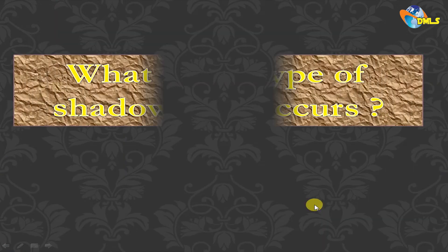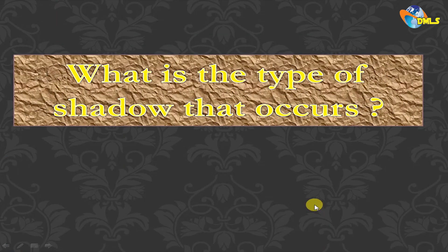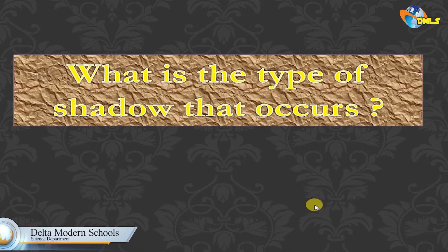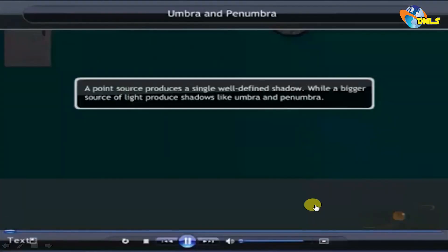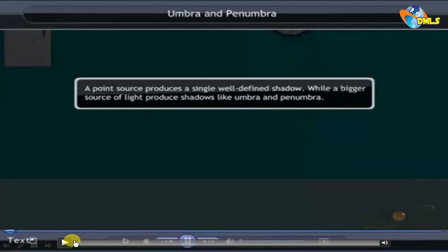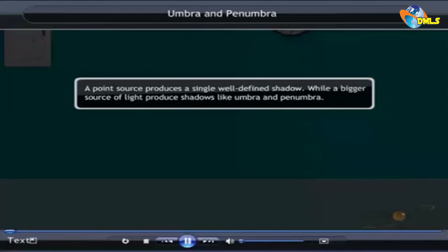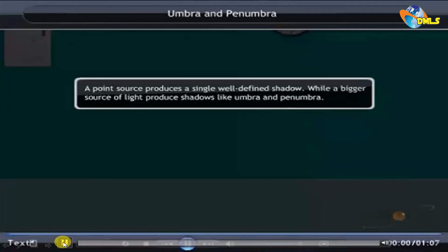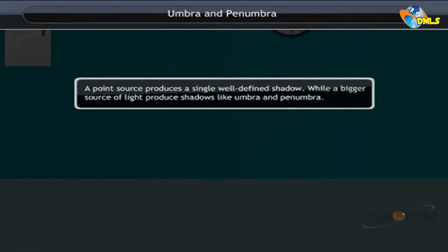I have a question now: what are the types of shadow that are formed? Do you have only one type of shadow or different types? After watching this video, you can know the types of shadow that are formed when the moon blocks the rays from reaching the Earth. A point source produces a single well-defined shadow, while a bigger source of light produces shadows like umbra and penumbra.